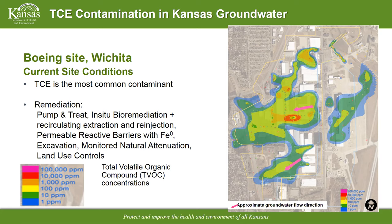The Boeing facility site sits with the Arkansas River and a really good aquifer to the west. The groundwater flow directions show that everything is moving to the west toward the Arkansas River and the really good aquifer associated with it.